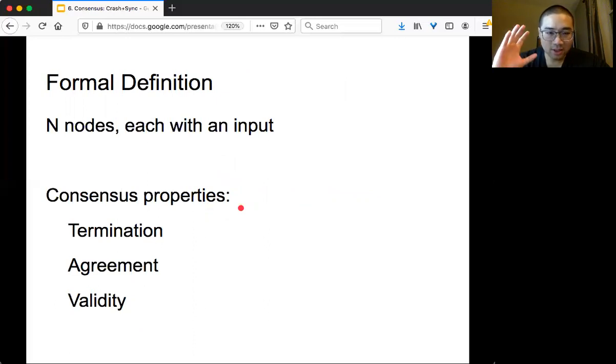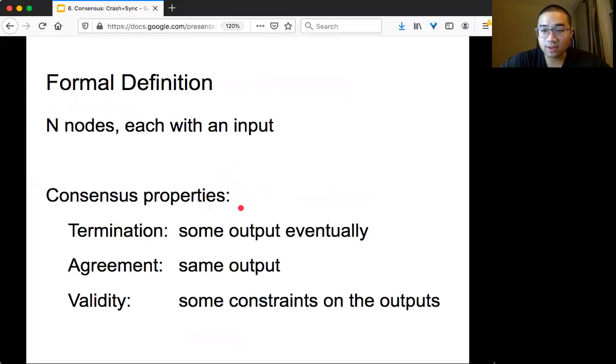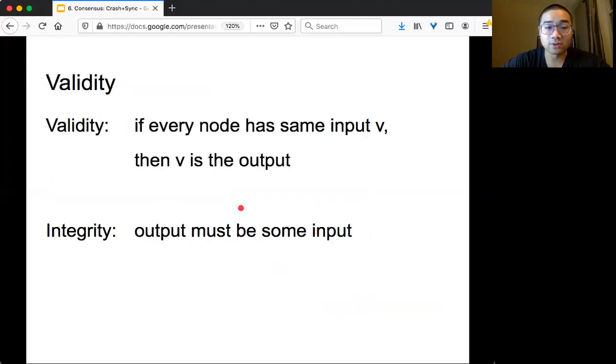So there should be three properties for consensus: termination, agreement, and validity. We have N nodes and inputs. Termination is obvious - you eventually need to have an output. Agreement is everybody has the same output. And somehow you need to link the output based on the input. You cannot just arbitrarily agree on something. So suppose everyone proposed zero, and then you say no, everyone should agree on one. That's not typically how consensus works, right? So we have termination, agreement, and validity.